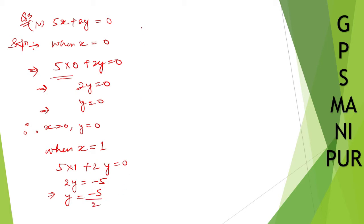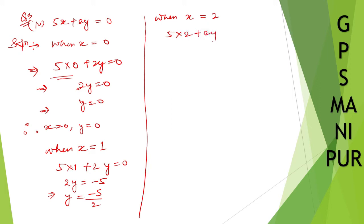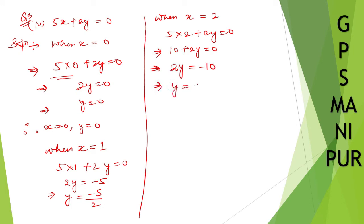When x is equal to 2: 5 into 2 plus 2y equal to 0, so 10 plus 2y equal to 0, 10 goes to the other side, 2y equal to minus 10, so y is equal to minus 10 divided by 2, which is minus 5. Therefore when x is equal to 2, y is equal to minus 5.